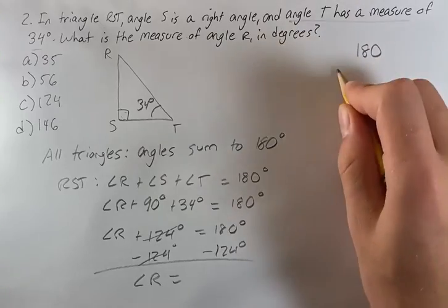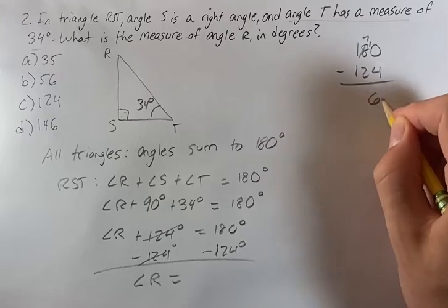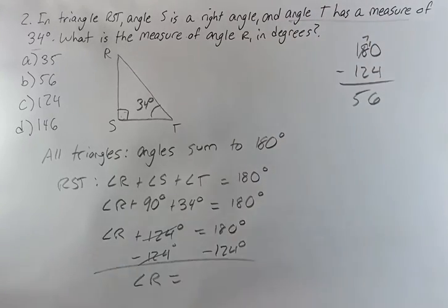With these canceling out, angle R is equal to 180 minus 124. If we go up here we can just do this: 7, 10, 10 minus 4 is 6, 7 minus 2 is 5. Angle R is equal to 56 degrees.